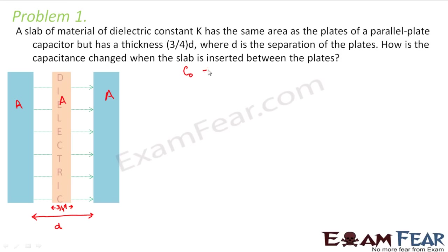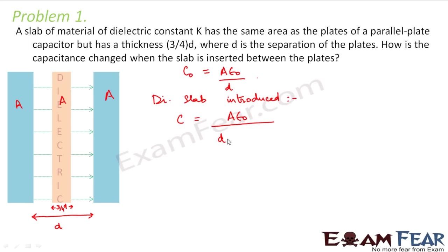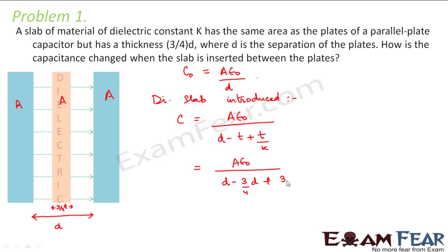Initially, before the slab is introduced, the capacitance is equal to A·ε₀ / D. Now let us suppose the dielectric slab is introduced. After the dielectric slab is introduced, the new capacitance becomes equal to A·ε₀ divided by (D − T + T/K), where T is the thickness of the dielectric slab which is equal to 3/4·D.